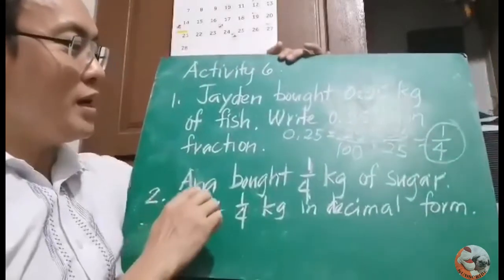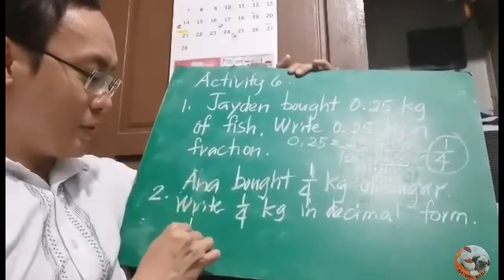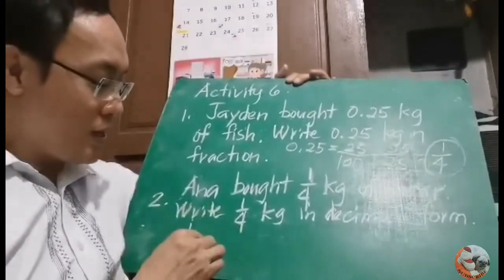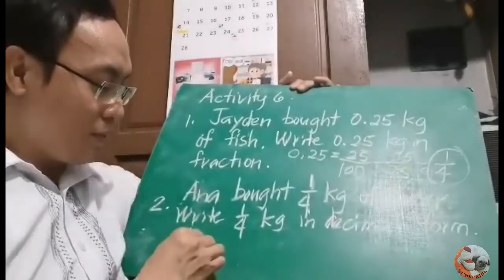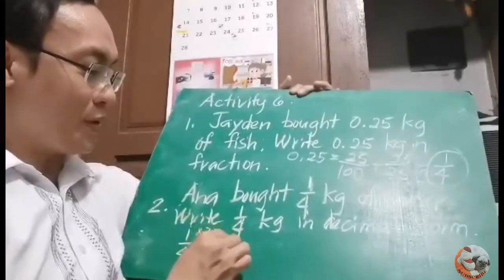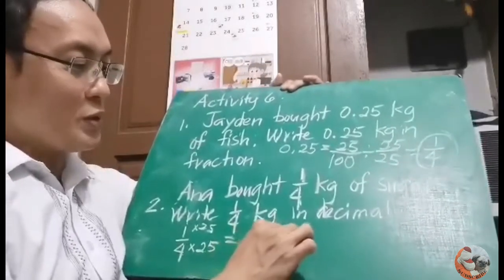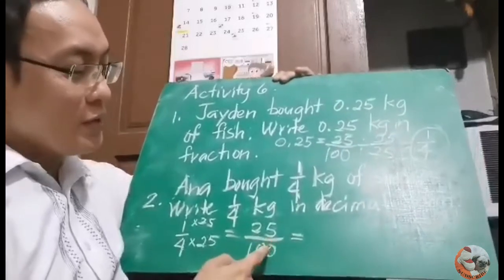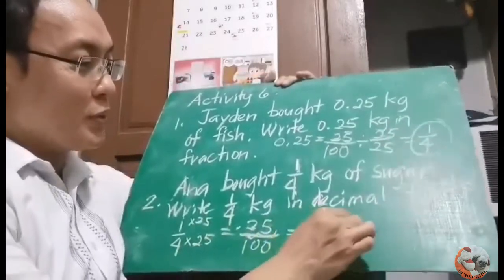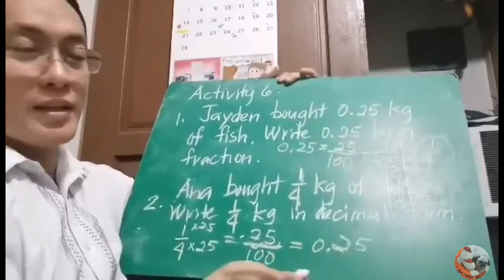Number 2 problem: Anna bought 1 fourth kilogram of sugar. Write 1 fourth kilogram in decimal form. It is easier to write it as a power of 10. Multiply 4 by 25 to get 100, and multiply the numerator 1 by 25 as well. 1 times 25 equals 25, and 4 times 25 equals 100. There are 2 zeros, so move 2 places to the left. The answer is 0.25, or 25 hundredths. So 1 fourth equals 25 hundredths.